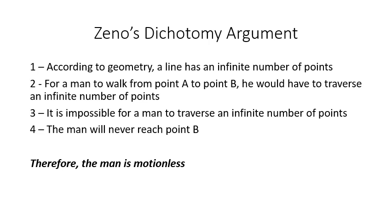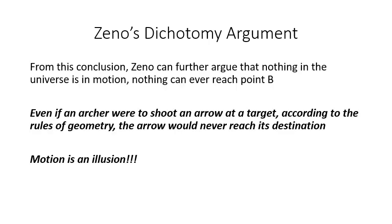Therefore, the man is motionless, always in a static state. From this conclusion, Zeno can further argue that nothing in the universe is in motion, because nothing in the universe could ever reach point B.